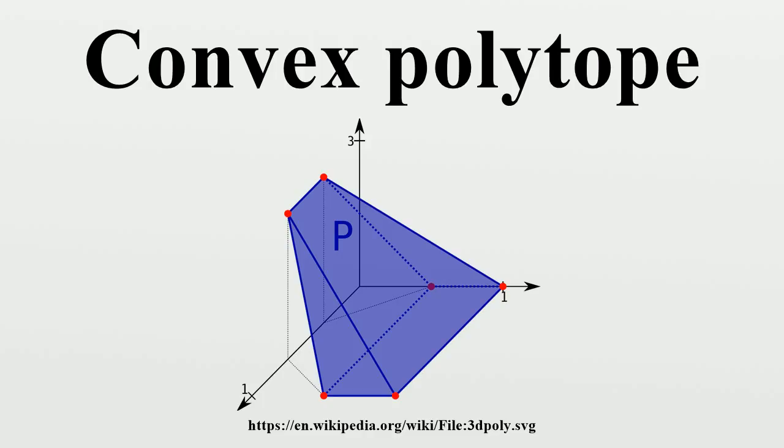The same is true for simple polytopes of arbitrary dimension. Kalai gives a simple proof based on unique sink orientations, because these polytope face lattices are determined by their graphs.